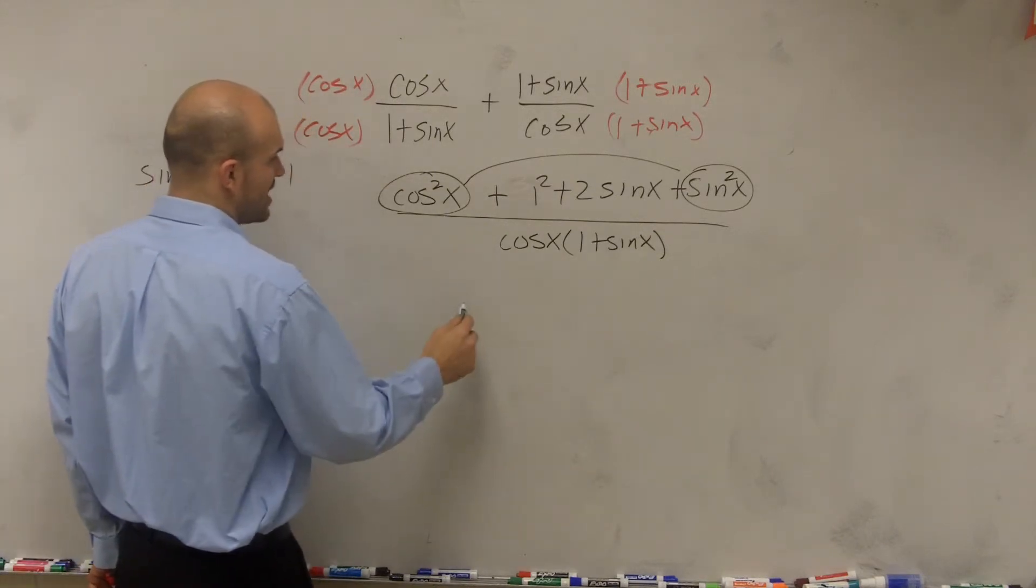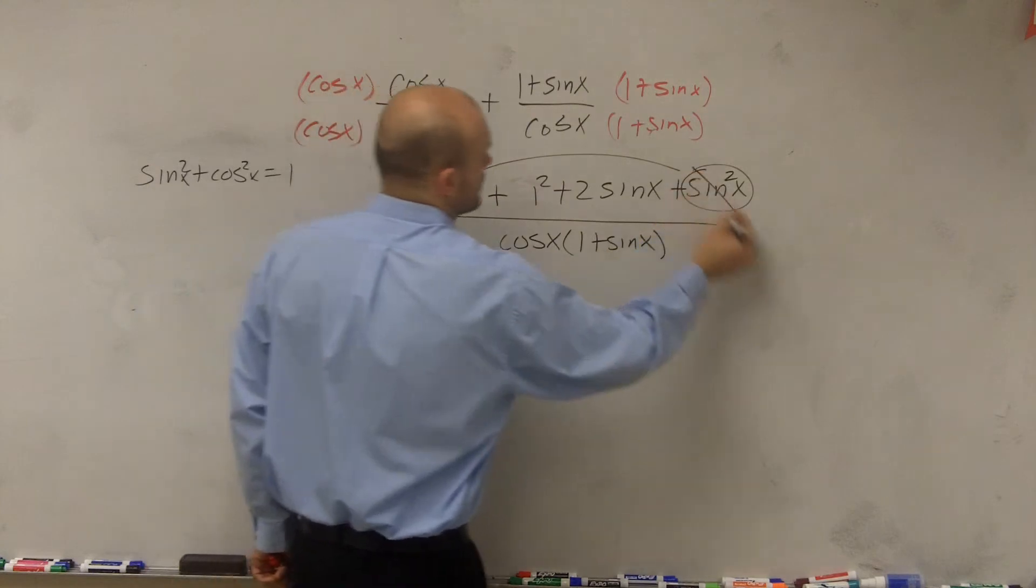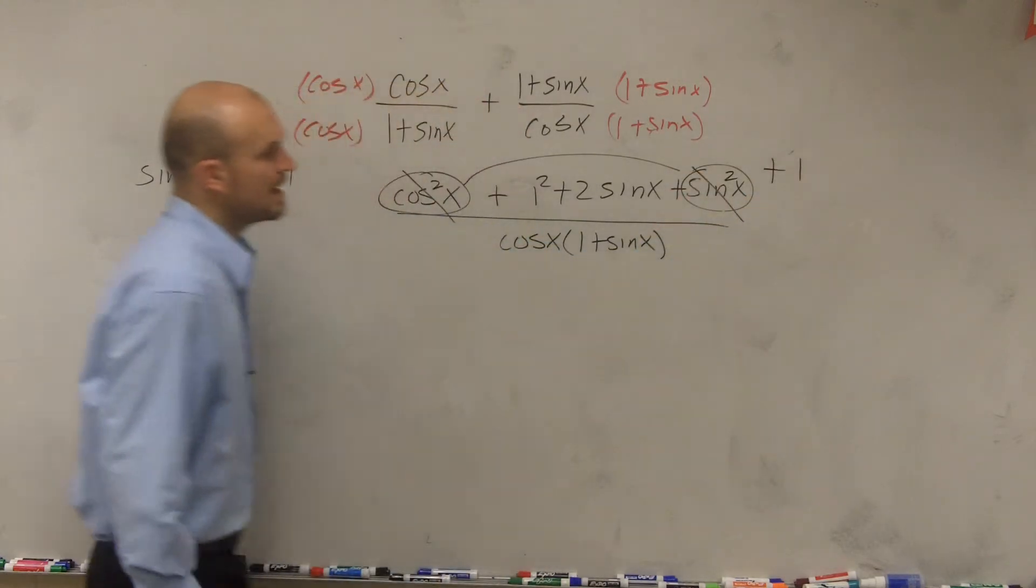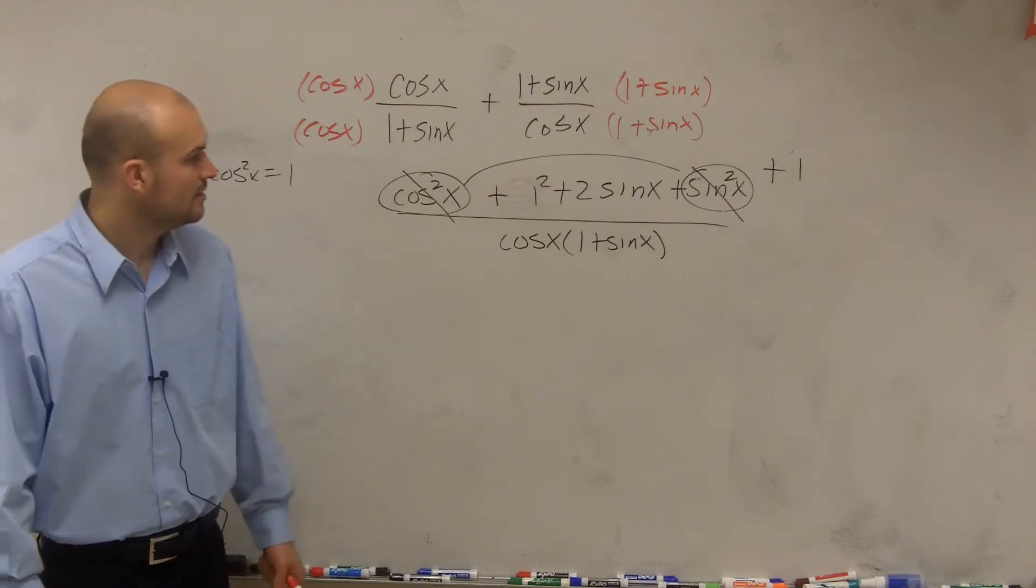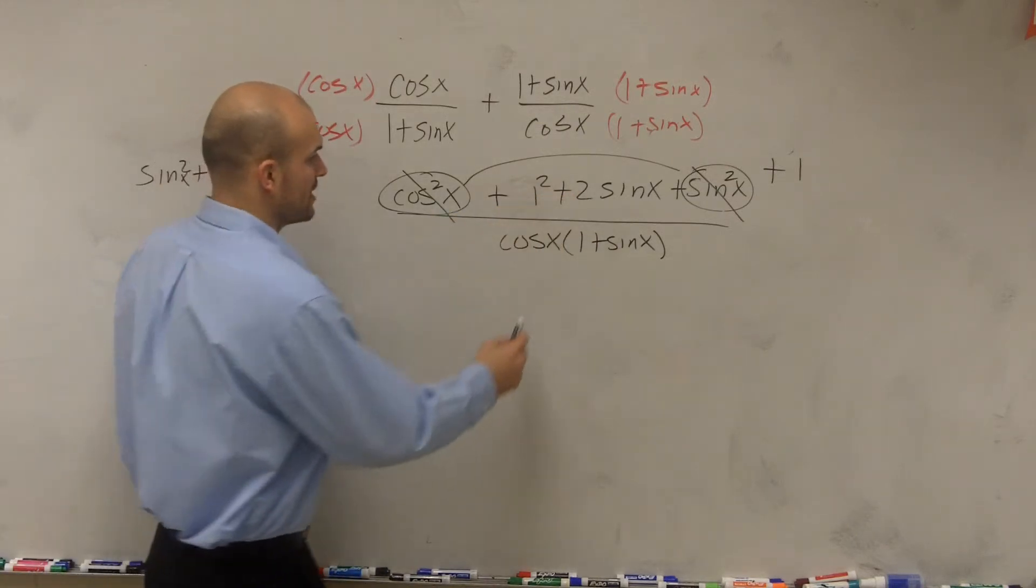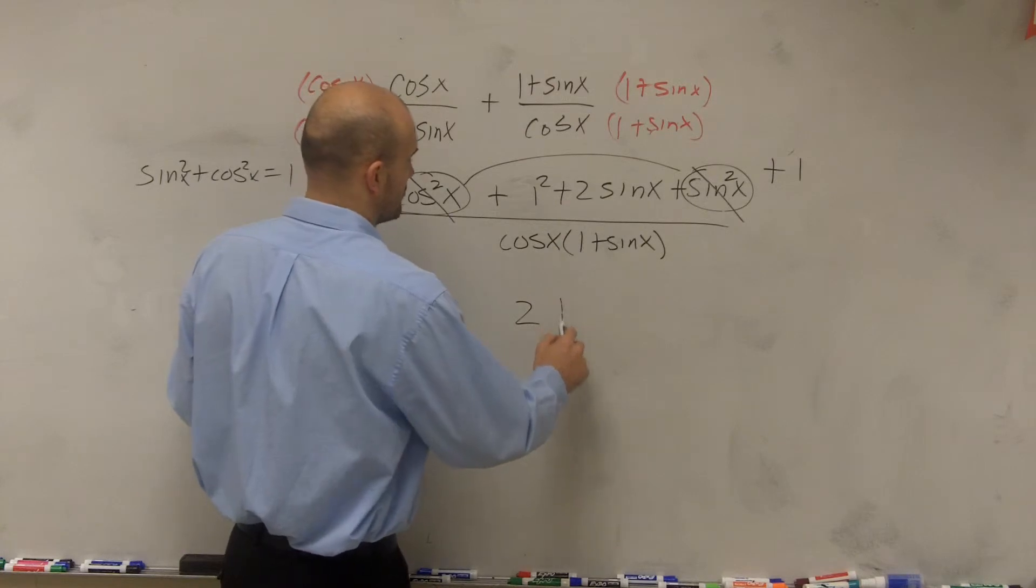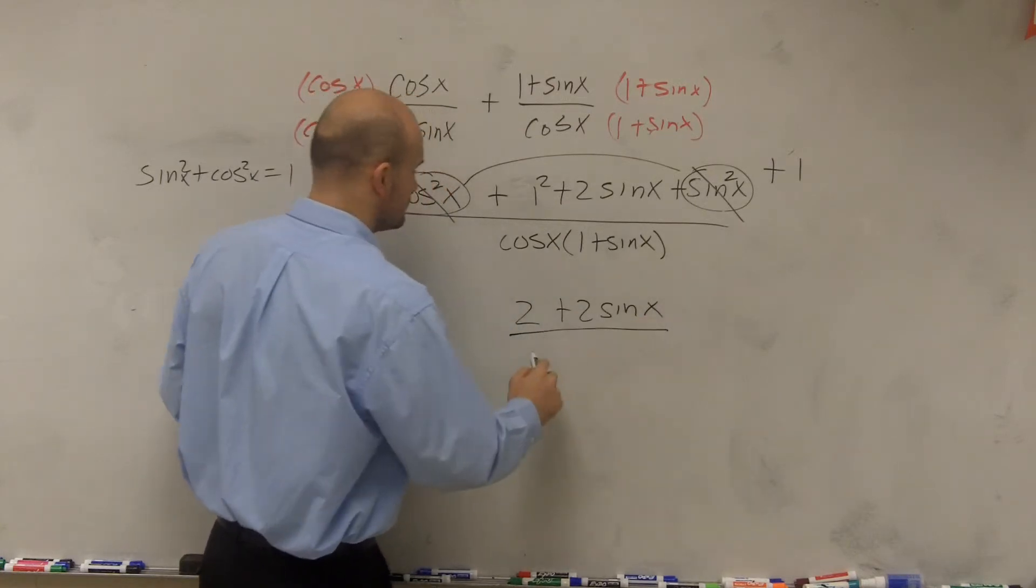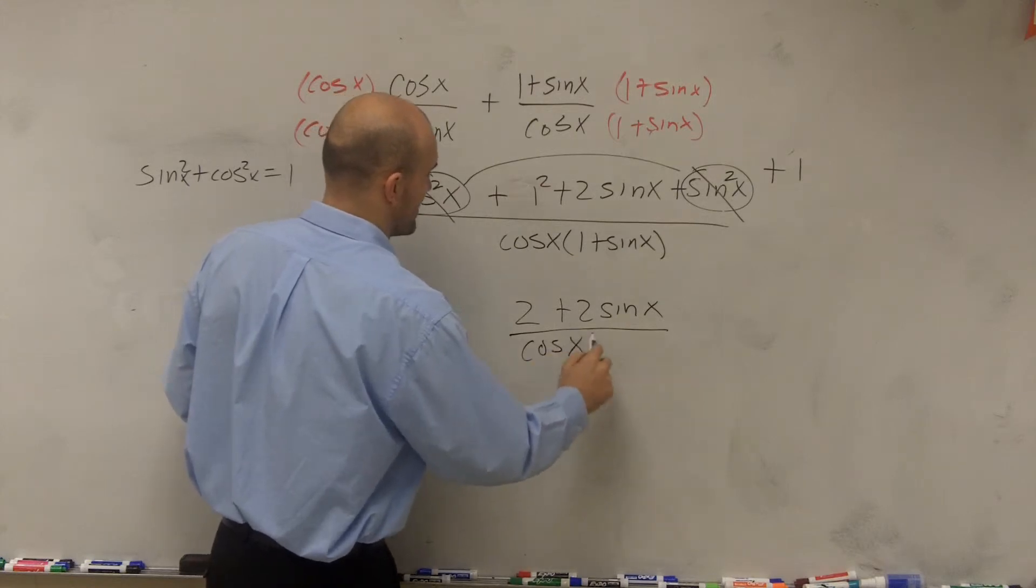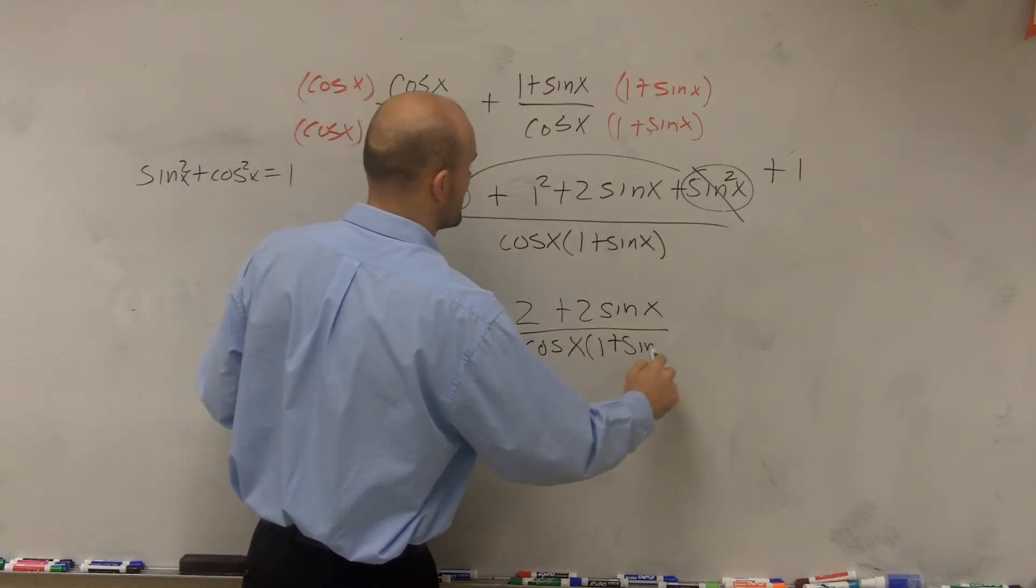So I can now say those two terms really just equal 1. So now I have 1 plus... let's just rewrite it. So now I have 2 plus 2 sine of x divided by cosine of x times 1 plus sine of x.